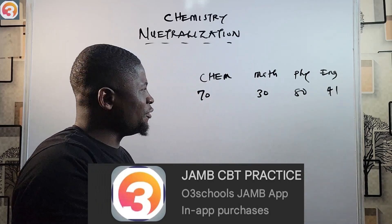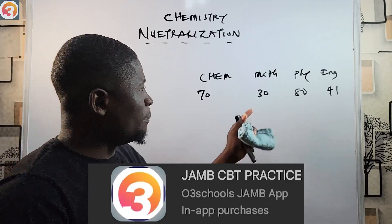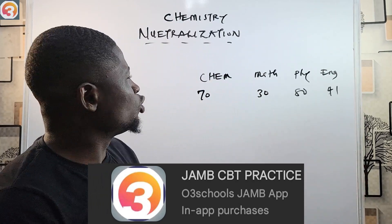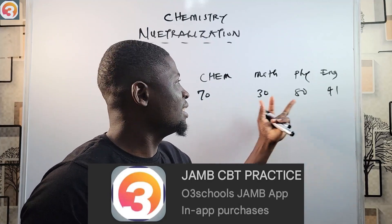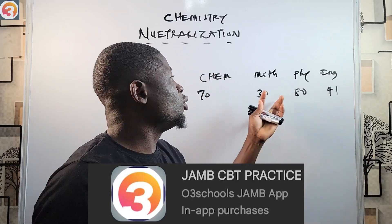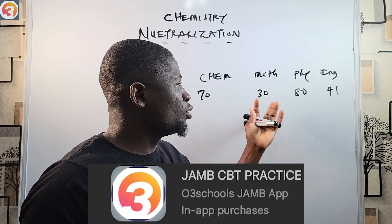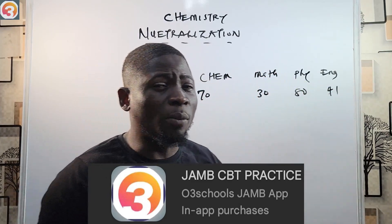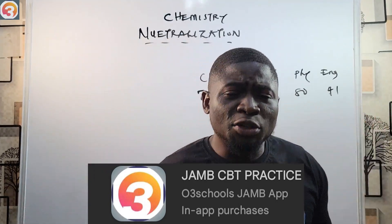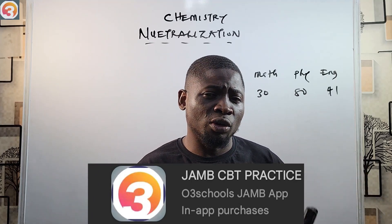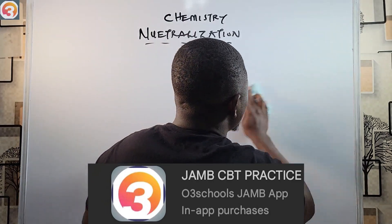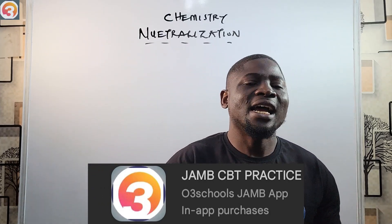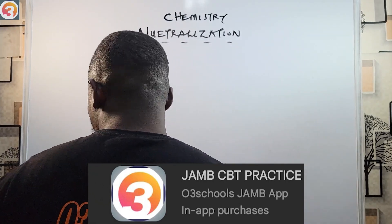The most important thing about the challenge is that you see your score every week. For example, if you score 70 in chemistry, 30 in maths, 80 in physics, and 41 in English, you know your maths and English need more focus. All videos for the JAMB syllabus in mathematics and English are on this channel. App activation is 3,000 naira. Download it, activate it, and you'll see yourself running.